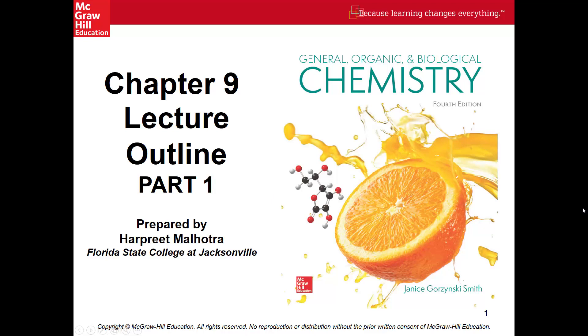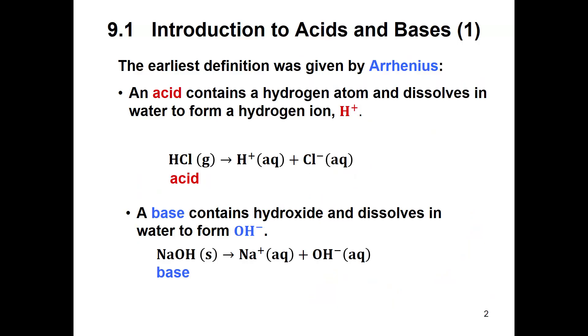In this chapter we're going to talk about acids and bases. The earliest definition of acid was by Arrhenius. Arrhenius said that an acid was anything that would donate a hydrogen ion and a base was anything that donates or forms a hydroxide ion. So your H+ defines an acid and your OH- hydroxide defines base.